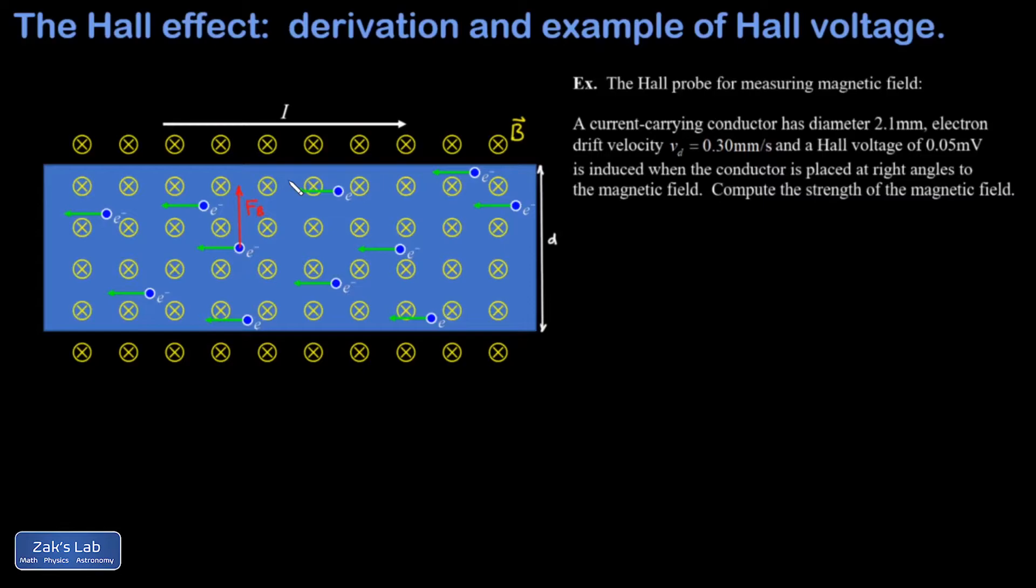All of the electrons are going to feel varying magnetic forces depending on their specific velocity, but we're just looking at the average drift velocity to determine this. I'm only going to label the forces on one electron, but we can agree all the electrons are experiencing magnetic forces.